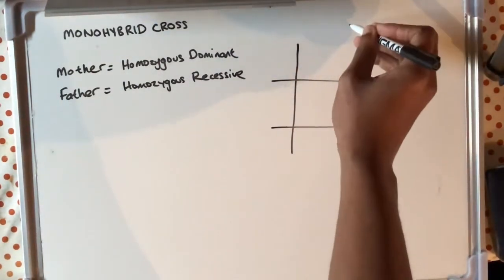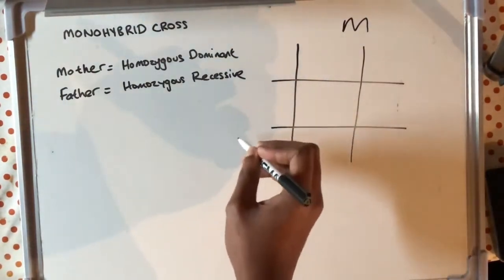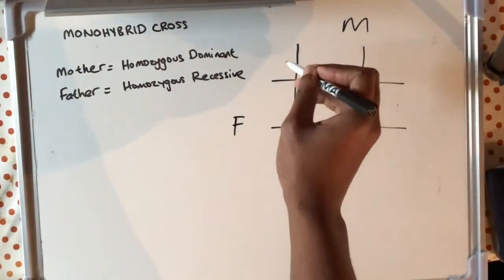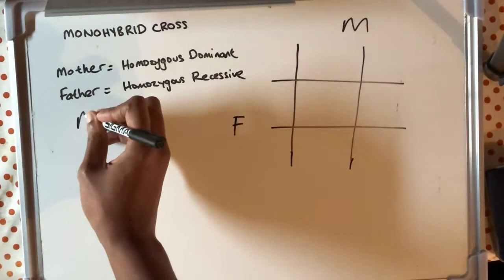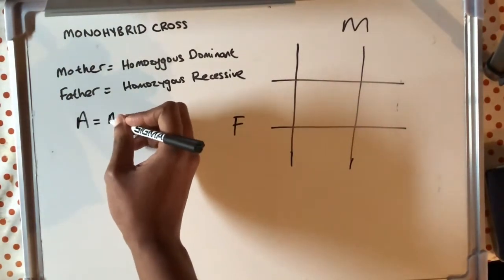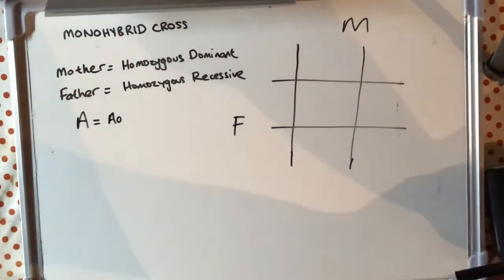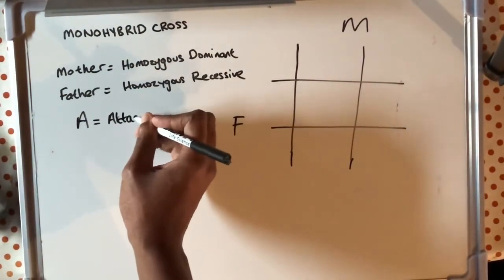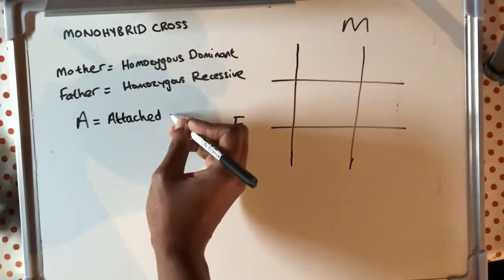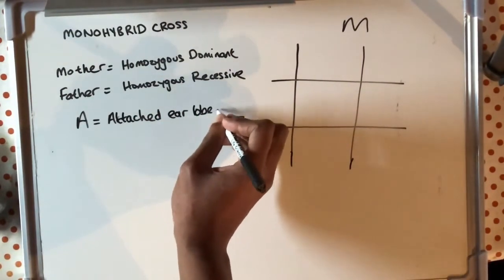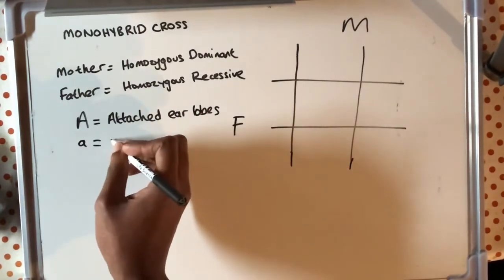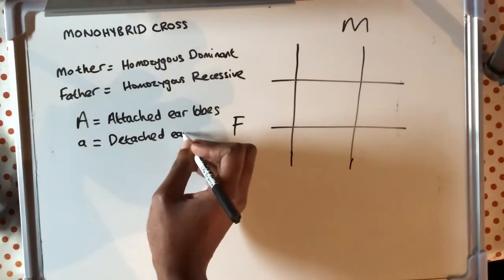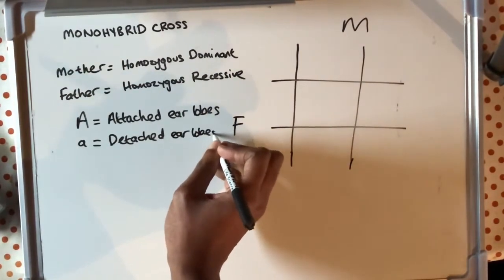What I am doing now is giving you an example of how to construct a Punnett square, just to remind you. In this case I am using two parents — mother and father — one will be homozygous dominant and the other will be homozygous recessive. We put the mother on the top of the Punnett square and the father to the left. I am using capital A to represent attached ear lobe and lowercase a to represent detached ear lobe.